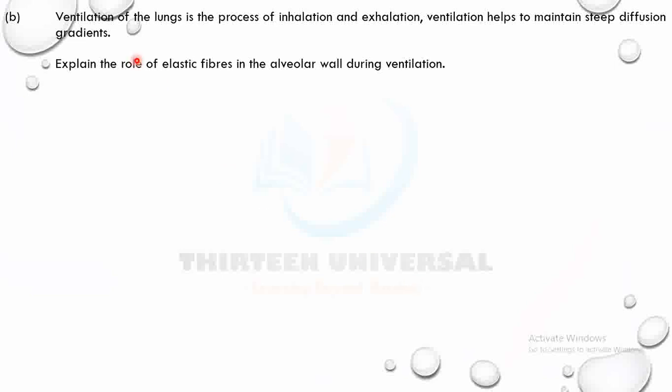Ventilation of the lungs involves inhalation and exhalation, and it helps to maintain a steep diffusion gradient. Explain the role of elastic fibers in the alveolar wall during ventilation. Elastic fibers stretch or expand — do not use 'contraction' or 'relaxation' for fibers. During inhalation, elastic fibers allow the alveolus to stretch, increasing surface area for gas exchange.